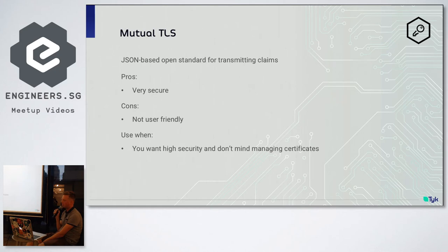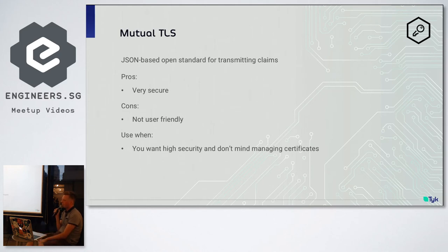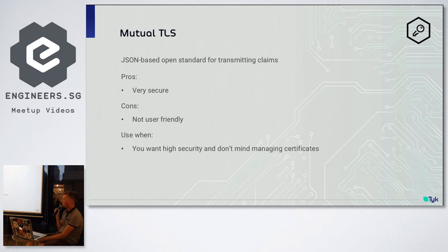The next option is Mutual TLS. It's the same technology we're familiar with in our browsers which allows us to connect to websites securely and trust that they're genuine — but in this case it's not just the client trusting the server, it's also the server trusting the client. The pros are that it's very secure — as the name suggests, it's a bi-directional authentication process and both parties gain trust of each other. The cons are that in terms of APIs, it's not really user-friendly. It only really caters for machine-to-machine interaction, as the unwieldy certificate provisioning process means you're not going to have an end user doing that sort of thing. Use it when you want high security and you and your consumers don't mind having to manage certificates.